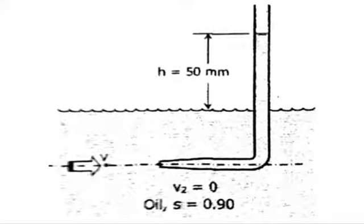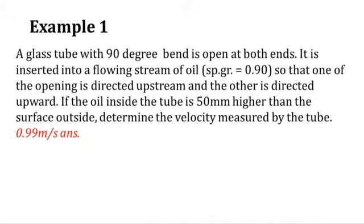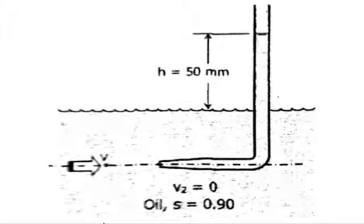It is inserted into a flowing stream of oil with specific gravity equal to 0.90, so that one opening is directed upstream and the other is directed upward. If the oil inside the tube is 50 millimeters higher than the surface outside, determine the velocity measured by the tube. Let's see the figure to better understand.